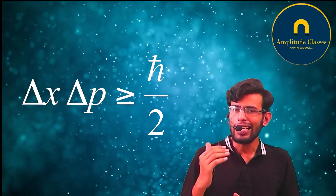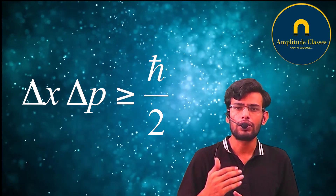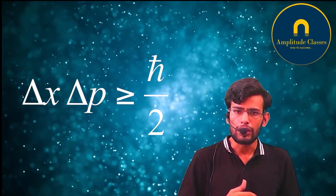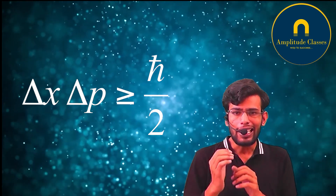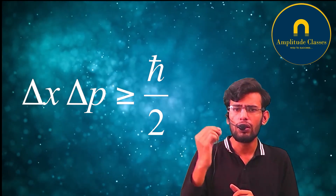Here h-bar is the reduced Planck constant, which equals h over 2π, and h is Planck's constant with a very small value of 6.626 × 10⁻³⁴ joule-seconds. This is very small, but at the quantum level it is considerable.